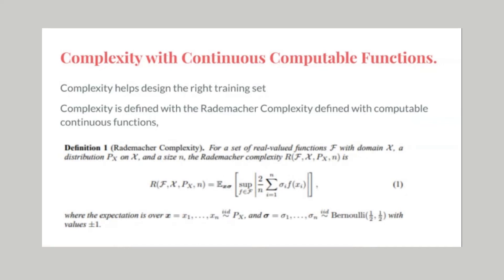The Rademacher complexity measure, ranging from minus one to one using continuous computable functions, is used to determine the complexity of the tensorized neural network for both supervised and unsupervised learning. For an A/B testing inspired model, a partition of the A and B sets is determined by the complexity metric to prevent overfitting and measure applicability to transfer learning. The VC dimension can also be determined using simple mathematics found in several references, including Blum 2015.